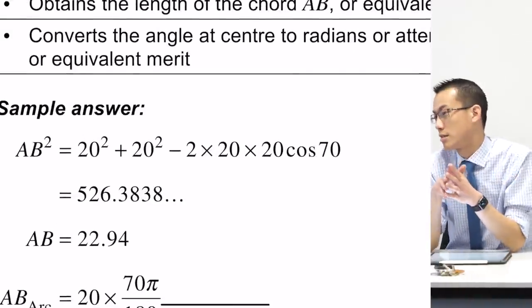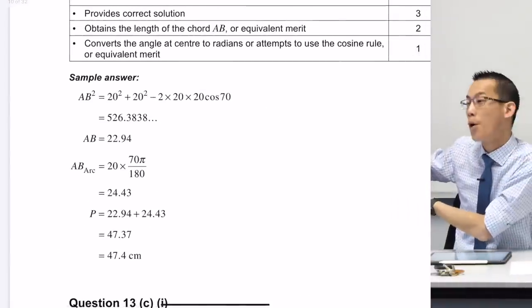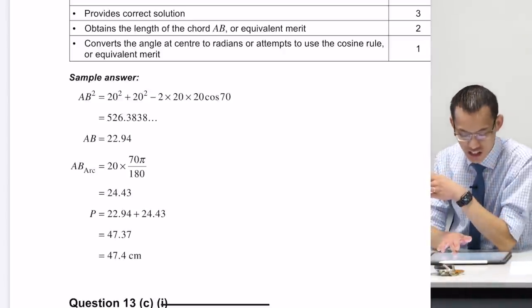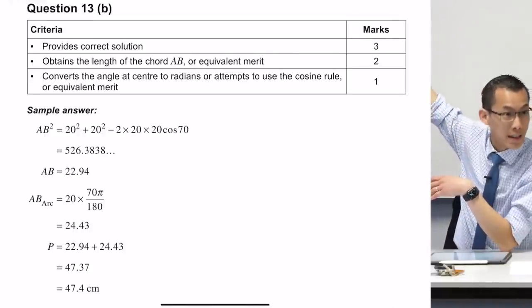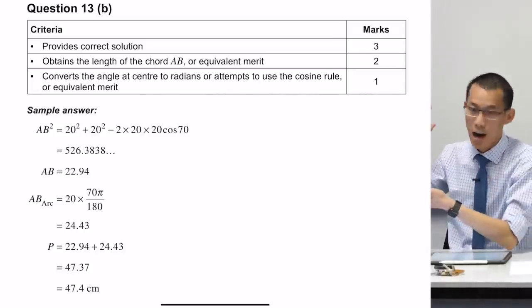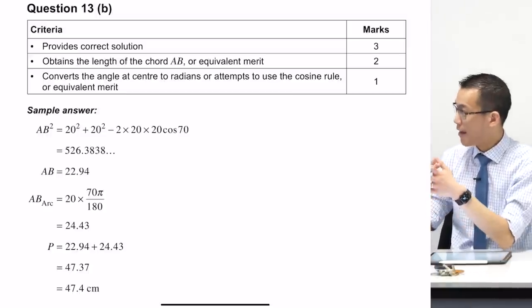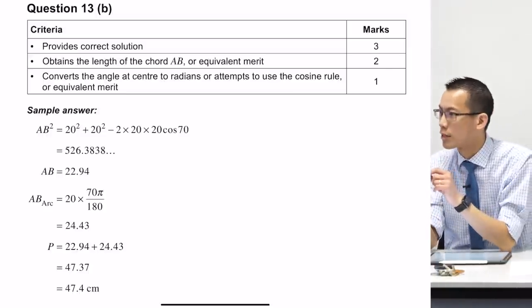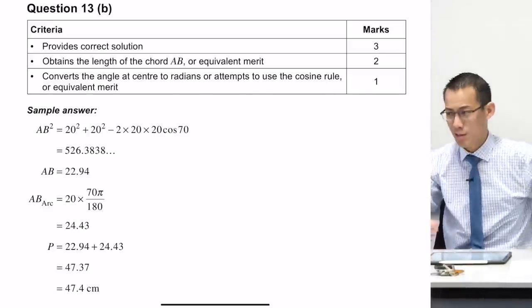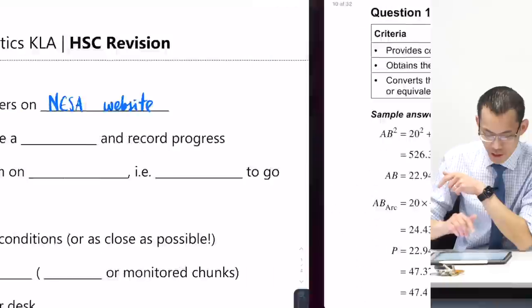So this is a question where you've got to do some geometry in a circle. There's some trigonometry, that's the cosine rule. So what they provide you is a sample answer. There are many different ways, as you guys know, to answer a question correctly. But this is just an example that, yep, this is pretty much what we were hoping for a perfect response. One mark, two marks, three marks, no half marks in the HSC. This is just a guide though, it says sample answer.